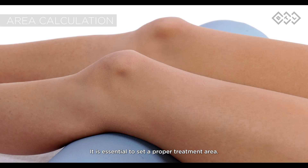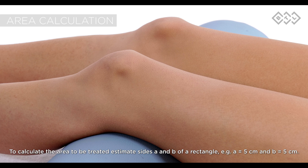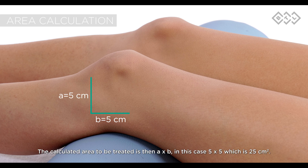It is essential to set a proper treatment area. To calculate the area to be treated, estimate sides A and B of a rectangle. For example, A equals 5 cm and B equals 5 cm. The calculated area to be treated is then A times B — in this case 5 times 5 — which is 25 cm².